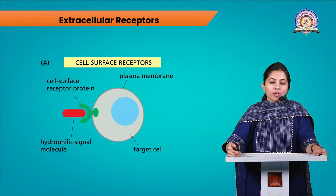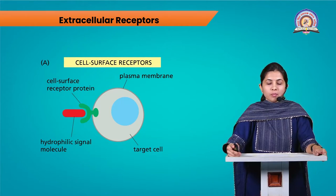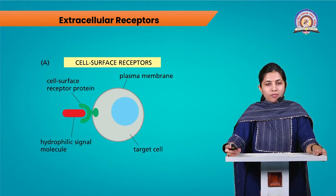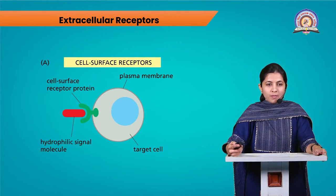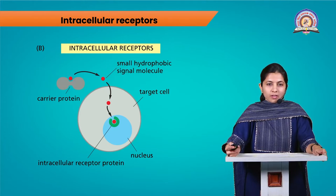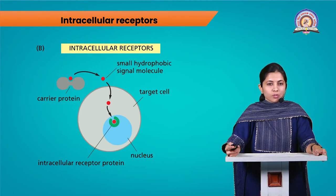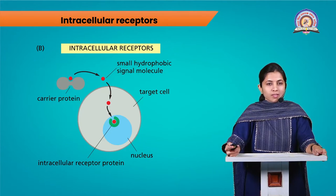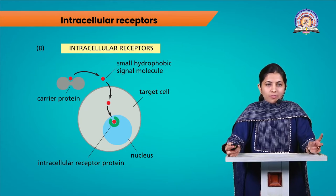Receptors can be of two types: extracellular and intracellular. Extracellular receptors are present on the membrane's outer surface and bind to hydrophilic signal molecules, leading to changes in gene expression by activating corresponding signaling pathways. Intracellular receptors are present inside the cell; a small hydrophobic signal molecule can bind to them and also lead to corresponding changes in gene expression.